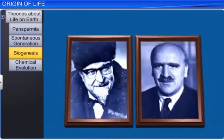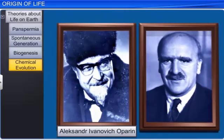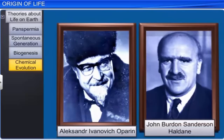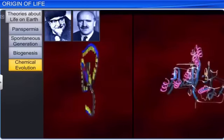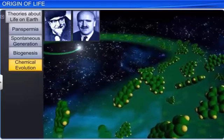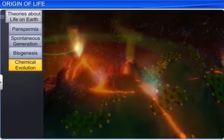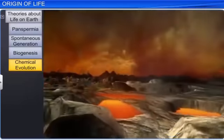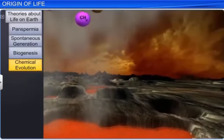Another theory called the theory of chemical evolution was expounded by Russian scientist Alexander Ivanovich Oparin and British scientist John Burden Sanderson Haldane. They proposed that the first form of life originated from pre-existing, non-living organic molecules such as RNA and protein. They also pointed out that the birth of life was preceded by chemical evolution, or the formation of diverse organic molecules from inorganic constituents. When the earth was created, the conditions were high temperature, volcanic storms, and a reducing atmosphere consisting of methane and ammonia.